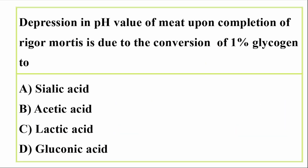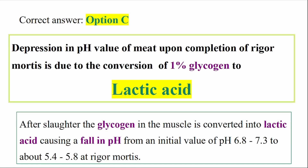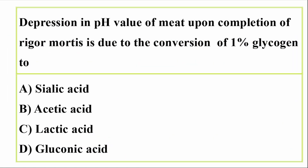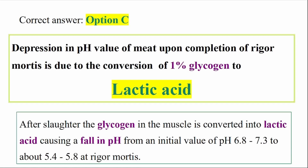Question: Depression in pH value of meat upon completion of rigor mortis is due to the conversion of glycogen to what? Correct answer: option C, lactic acid. After slaughter, the glycogen in the muscle is converted into lactic acid, forcing a fall in pH from an initial value of pH 6.8–7.3 down to about 5.4–5.8 at rigor mortis.